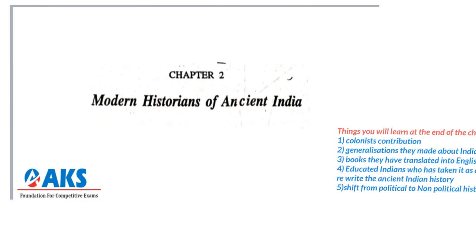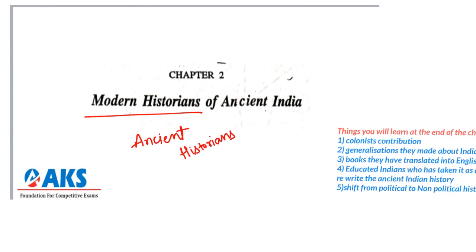Here in Chapter 2, they are going to talk about the modern historians of ancient India. What does it mean? Weren't there any ancient historians to write about ancient India? Why should modern historians have to write something about ancient India?